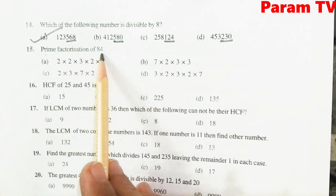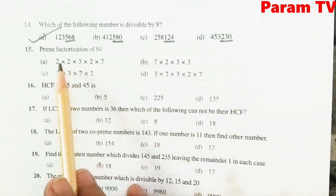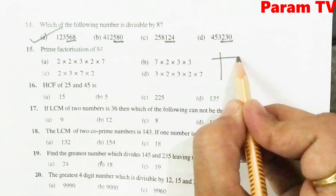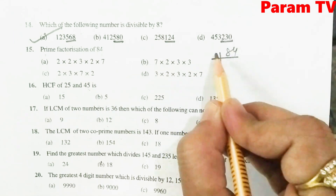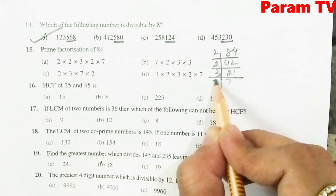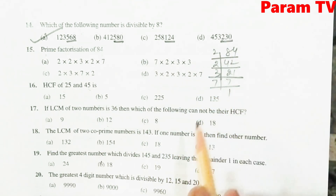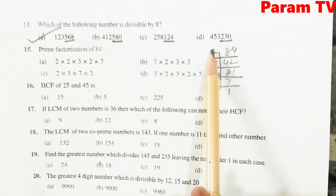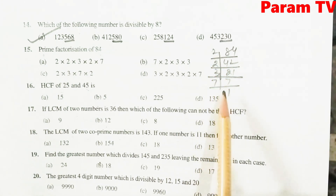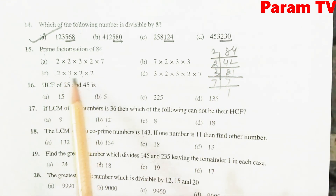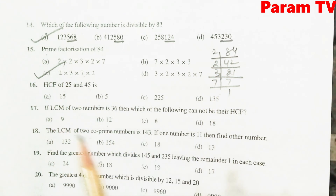Prime factors of 84: 84 के prime factors बनाइए. 84 = 2 × 2 × 3 × 7. तो कौन सा option match कर रहा है — 2, 2, 3, 7. C is the right option.